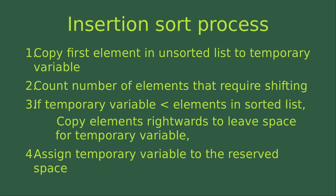In general, if insertion sort is needed, we would go over four steps. First, I would copy the first element in the unsorted list to a temporary variable. Then I will count the number of elements that require shifting. Then I will check if the temporary variable is smaller than the elements in the sorted list, and copy those elements rightwards to leave space. Finally, I will assign the temporary variable to the reserved space.